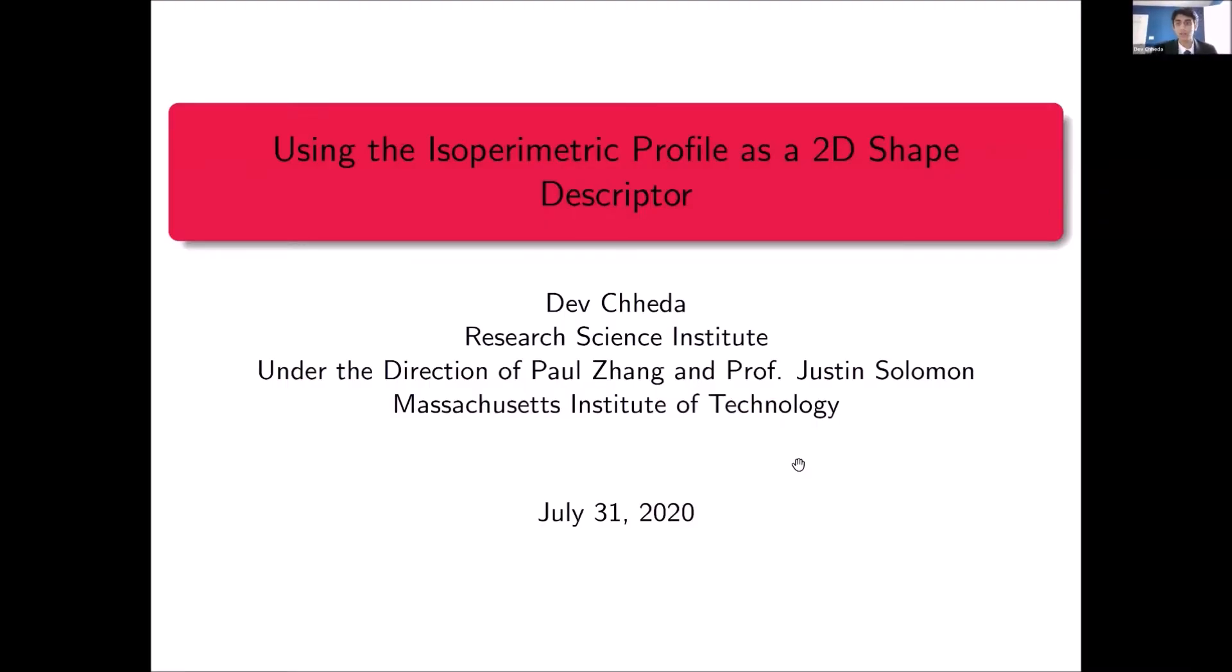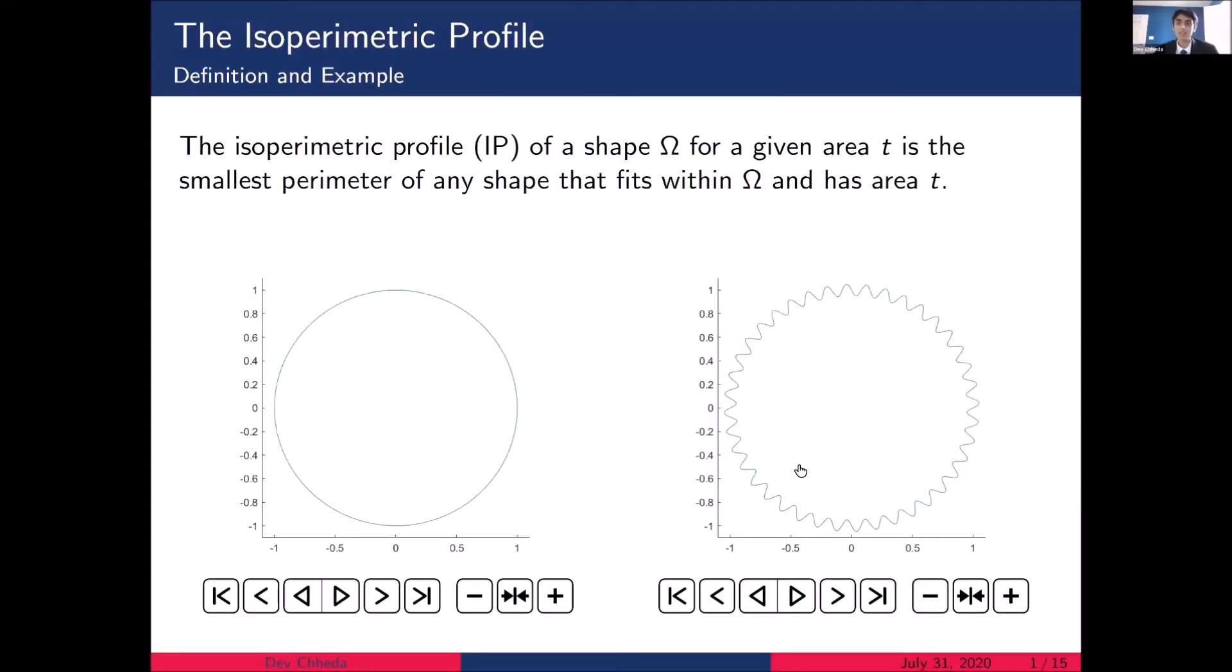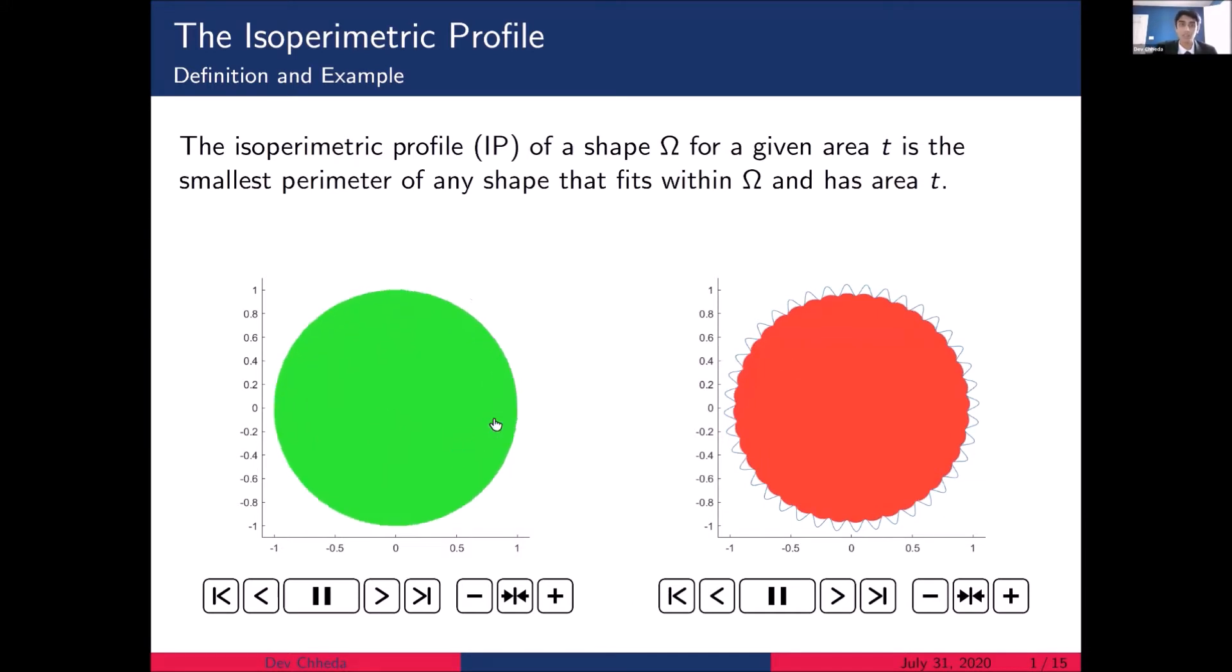So the first thing I want to discuss is the isoperimetric profile itself. The isoperimetric profile of a shaped omega for a given area T is the smallest perimeter of any shape that fits within omega and has area T. So you can see here, I've plotted out the isoperimetric profiles of a circle on the left and a perturbed circle on the right. So with the circle, you can see that at each area level, the smallest perimeter shape is simply a smaller circle.